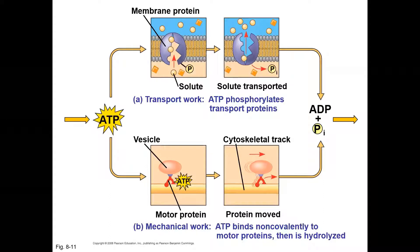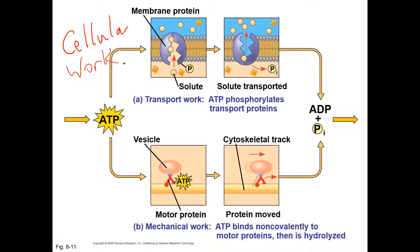Last day we were talking about bioenergetics and I had finished talking about ATP, which is used for cellular work. Some cellular work is obvious: things being pushed across membranes, ATP being hydrolyzed with sodium and potassium moving across a membrane. We also have muscle contraction, and in another example, vesicles being moved around by motor proteins. That's a big part of cellular work.